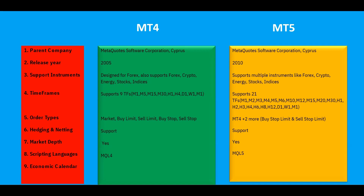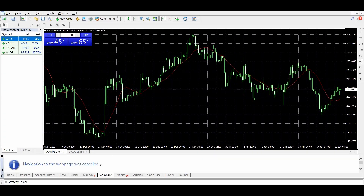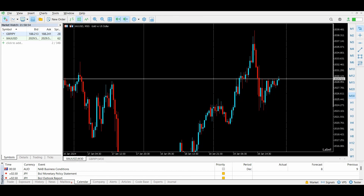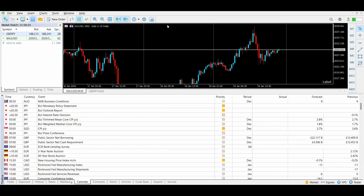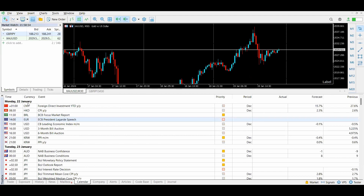The next point is the economic calendar. In MT4 there is no built-in economic calendar for viewing economic news. In MT5, however, a built-in economic calendar is available. On the MT4 terminal you can see there is no calendar option in the bottom section. On the MT5 terminal, the Calendar tab is visible.